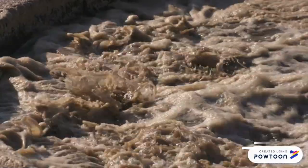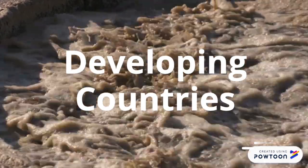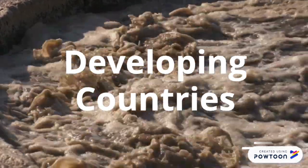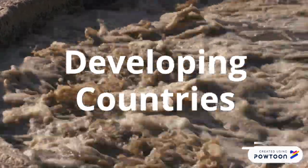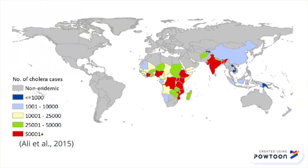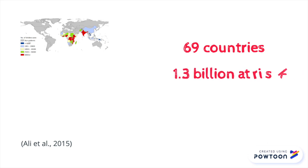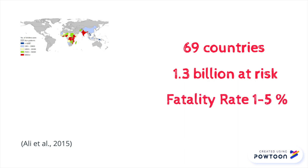Cholera is most prevalent in countries that lack advanced sanitation and sewage treatment facilities, such as developing countries. It is endemic in 69 countries and puts 1.3 billion people at risk. Of those infected, the fatality rate ranges from one to five percent.